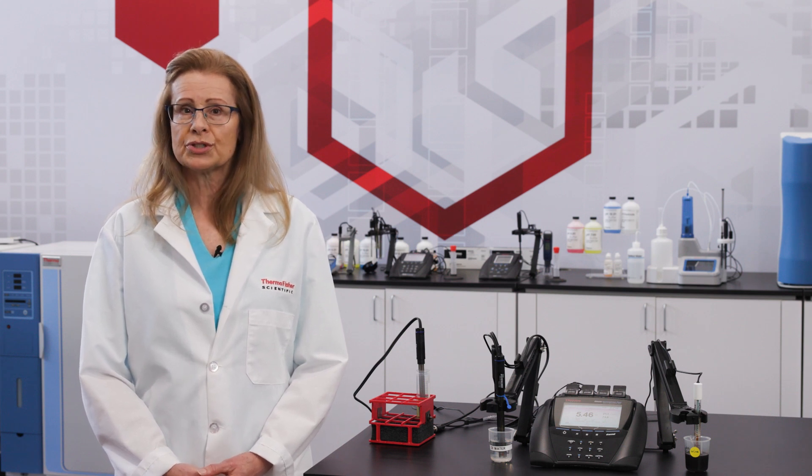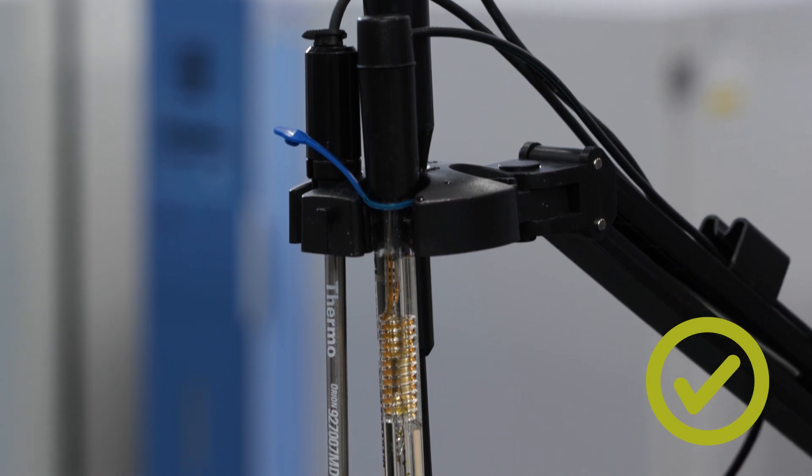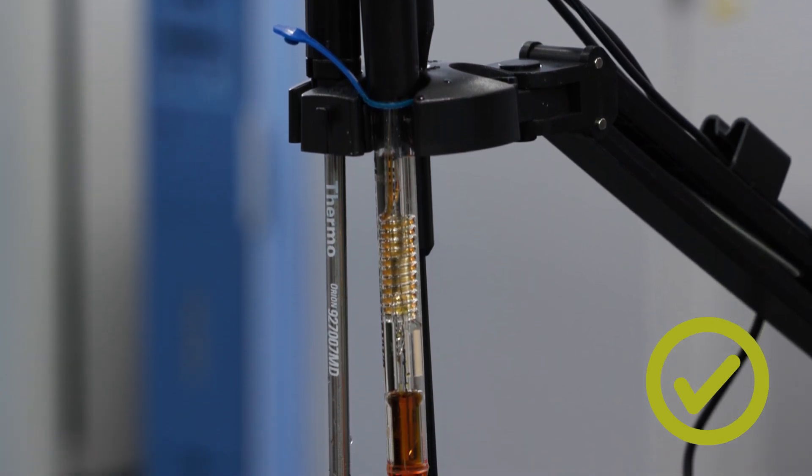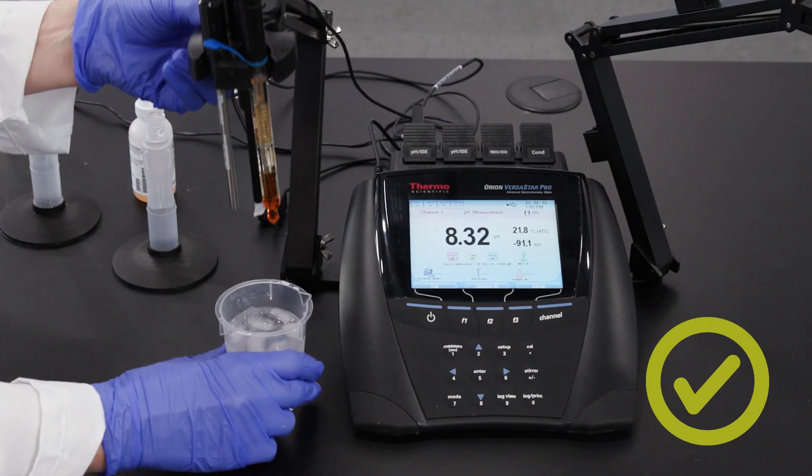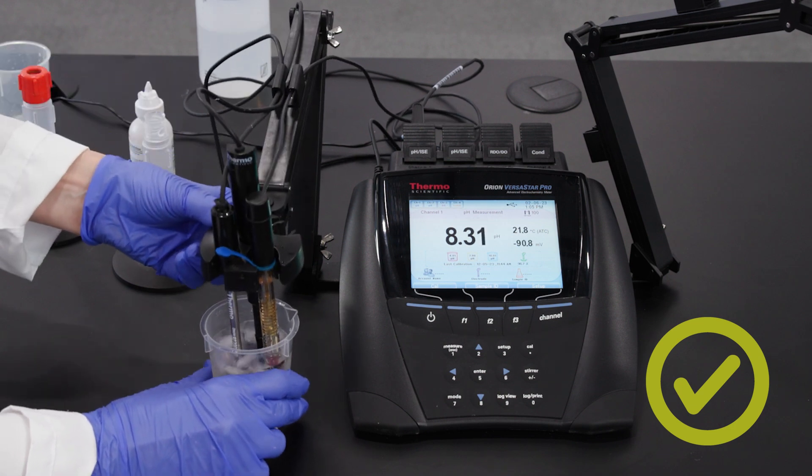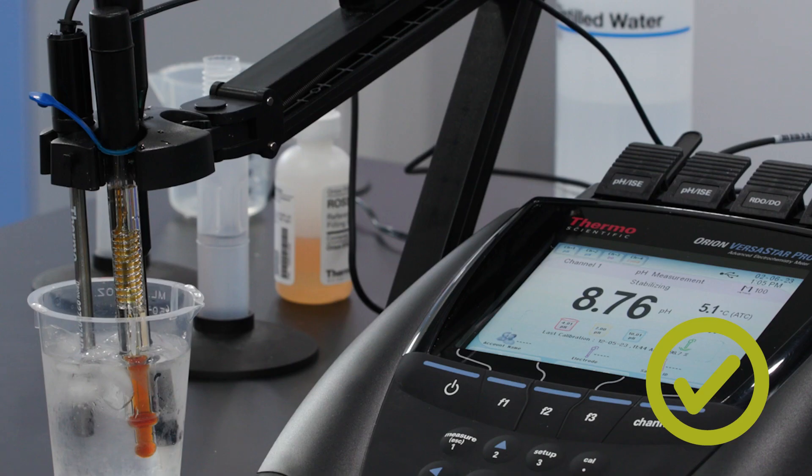In this case, pH readings of warmer or cooler samples will not be accurate. The farther that sample temperature from the manually set temperature, the more severe the error. Use an ATC probe or a triode electrode with an integrated temperature sensor. This allows the correct pH value to be assigned during calibration and corrects the calibrated slope for temperature effects when samples are not at room temperature.